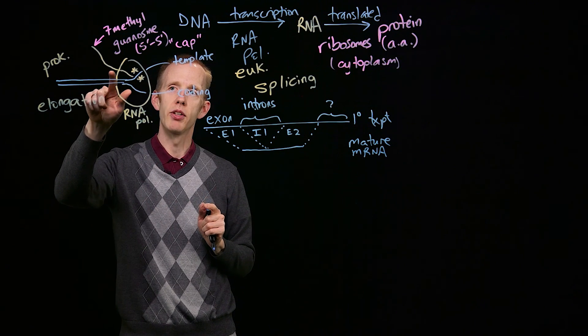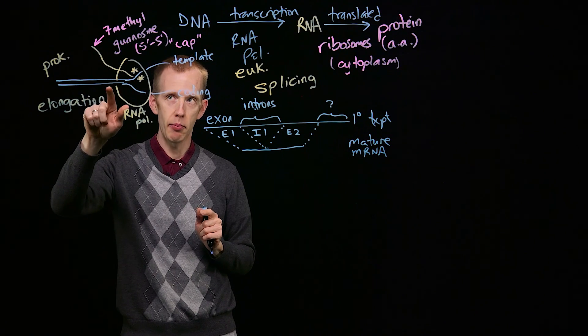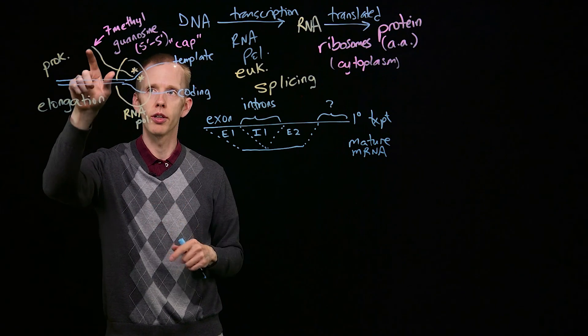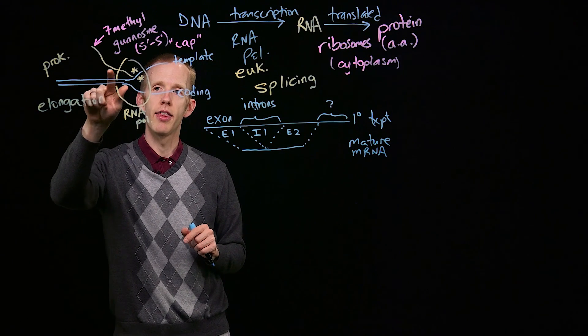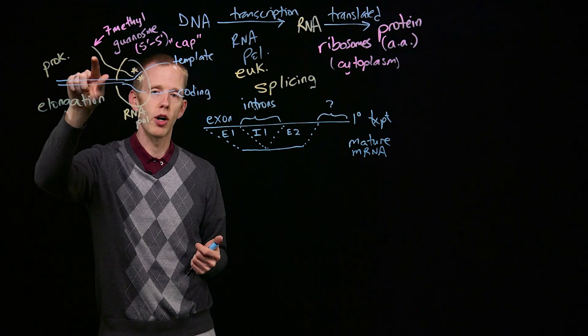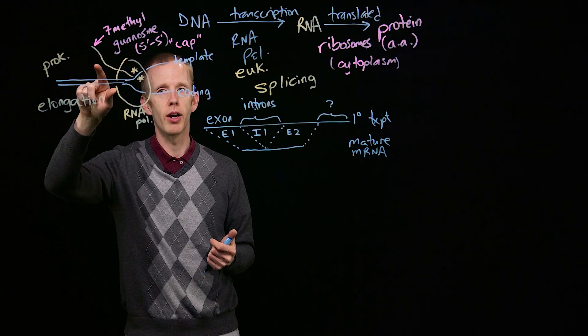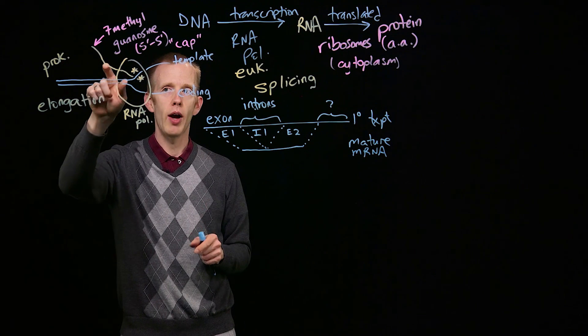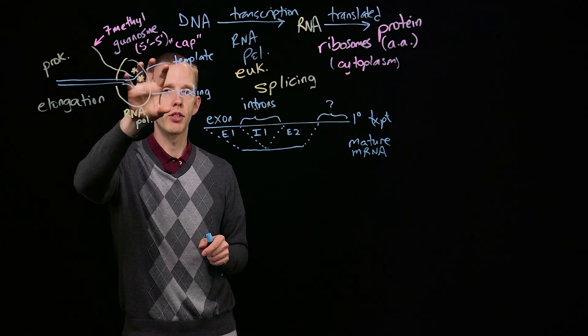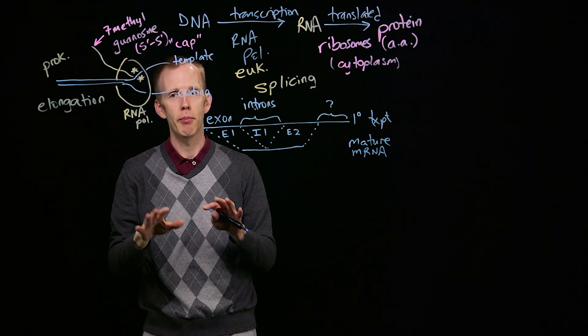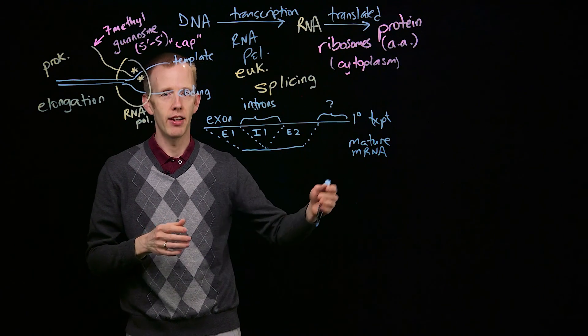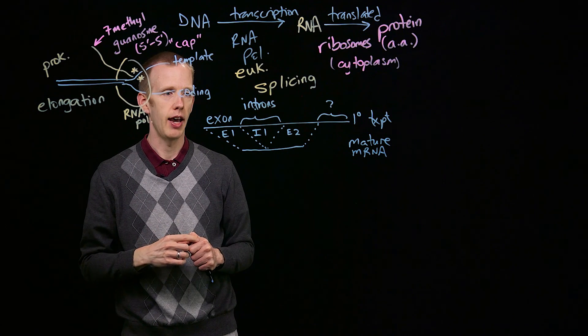So splicing happens as transcription is happening. So just like we learned earlier, the 7-methylguanosine cap is added pretty soon after that nascent growing messenger RNA molecule exits RNA polymerase. Splicing can also happen while RNA polymerase is moving along the DNA and making the transcript. So splicing happens alongside transcription, and then at the very end of the process the tail is added.